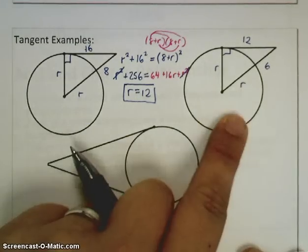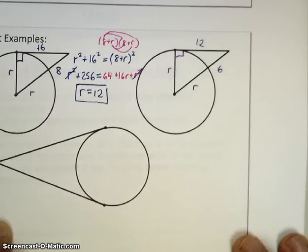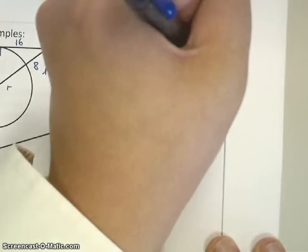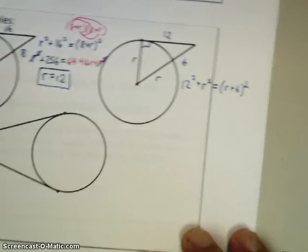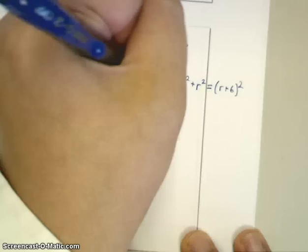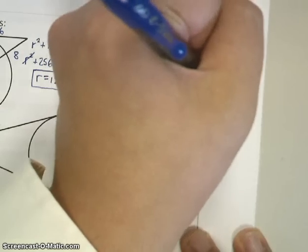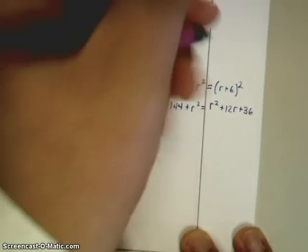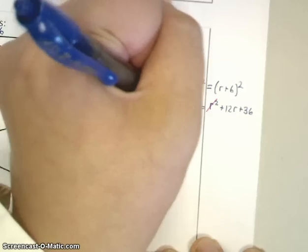Try the example on the right here. Press pause, try it, and then press play when you're ready for a solution. In this case, I have 12 squared plus r squared equals r plus 6 squared. Again, be very careful with how you work this. This ends up being 144 plus r squared equals r squared plus 12r plus 36. Again, I obtain that through FOILing. The r squareds will cancel each other out, so I'm left with 144 equals 12r plus 36. Solving this equation, I'm going to get an r value of 9.